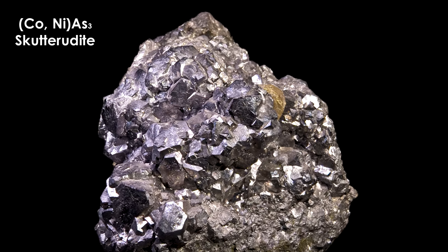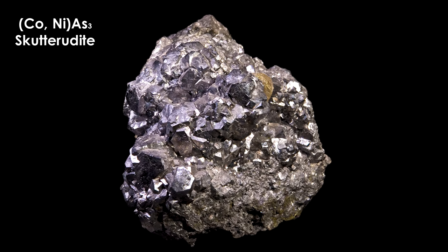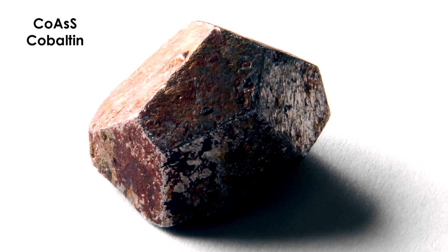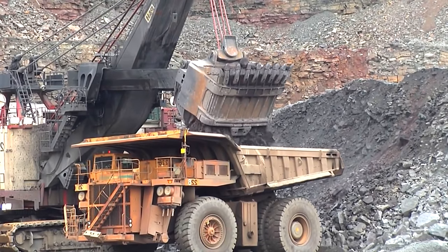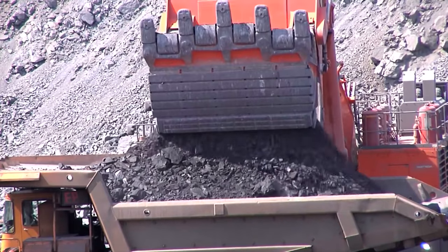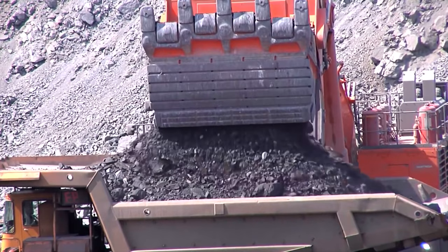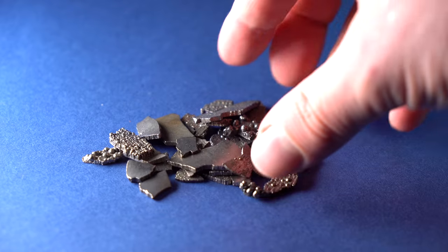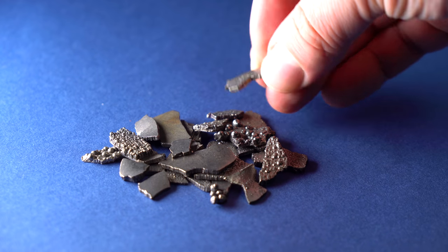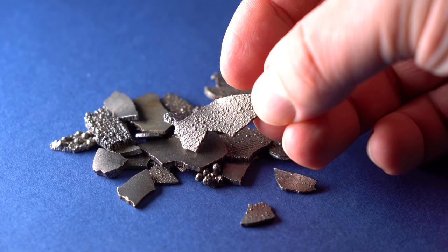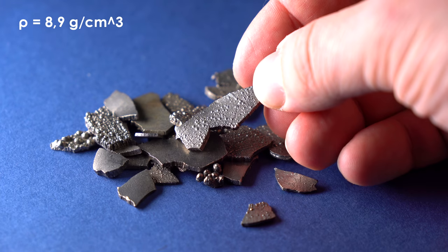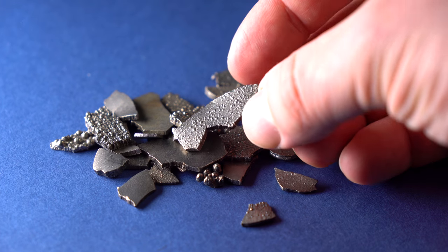Nowadays, cobalt is mostly extracted from cobalt-containing minerals, which are mined along with nickel and copper, and in this process, cobalt is a by-product. After being electrolytically refined, pure metallic cobalt looks like a grey metal, the density of which is similar to that of copper.